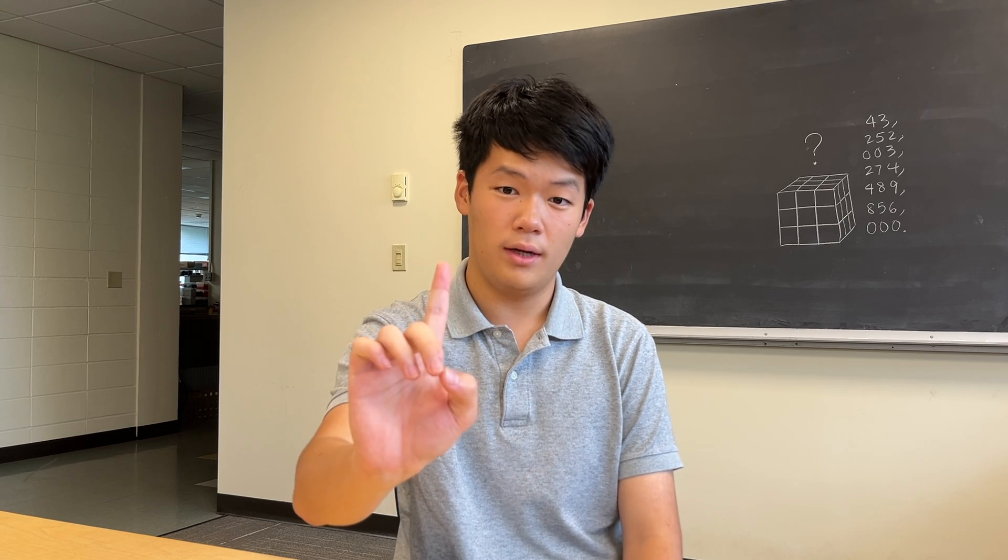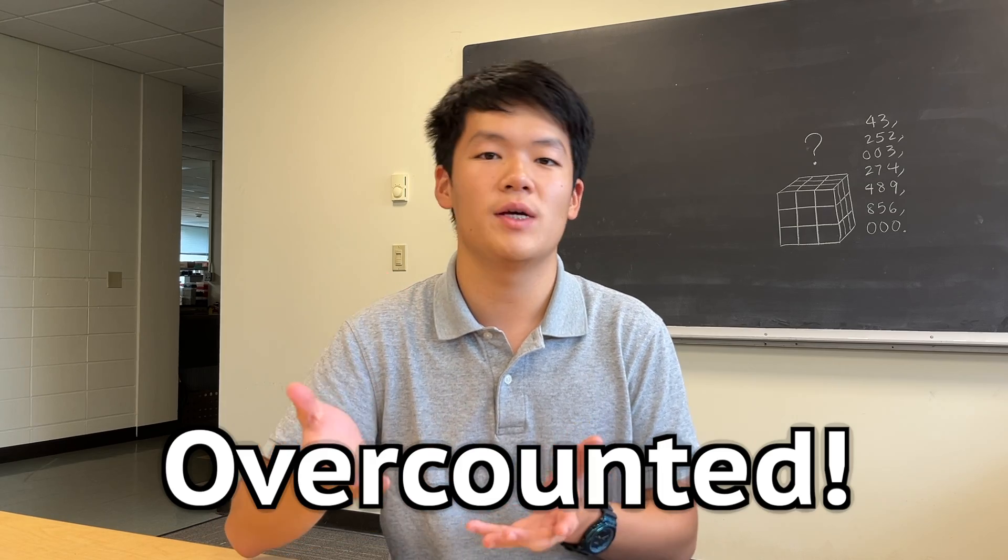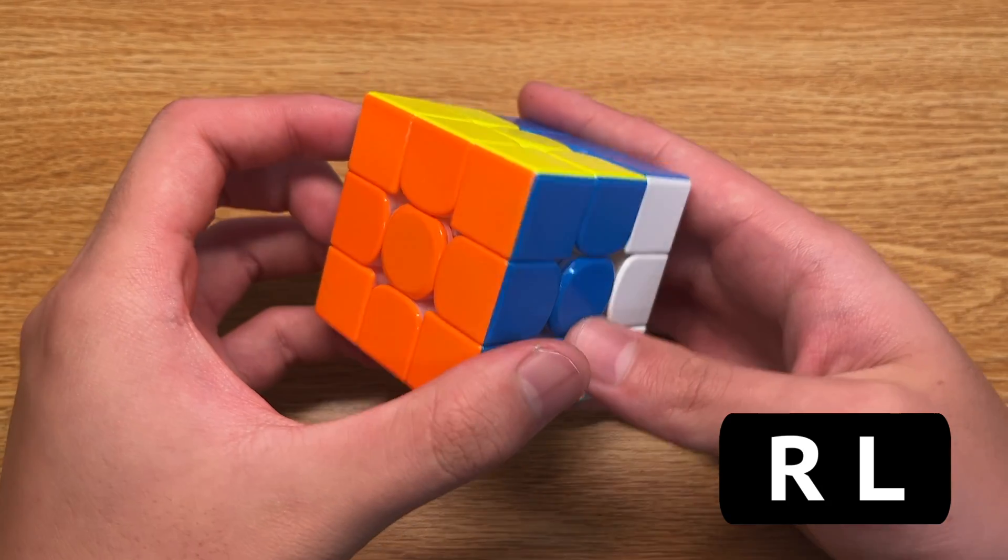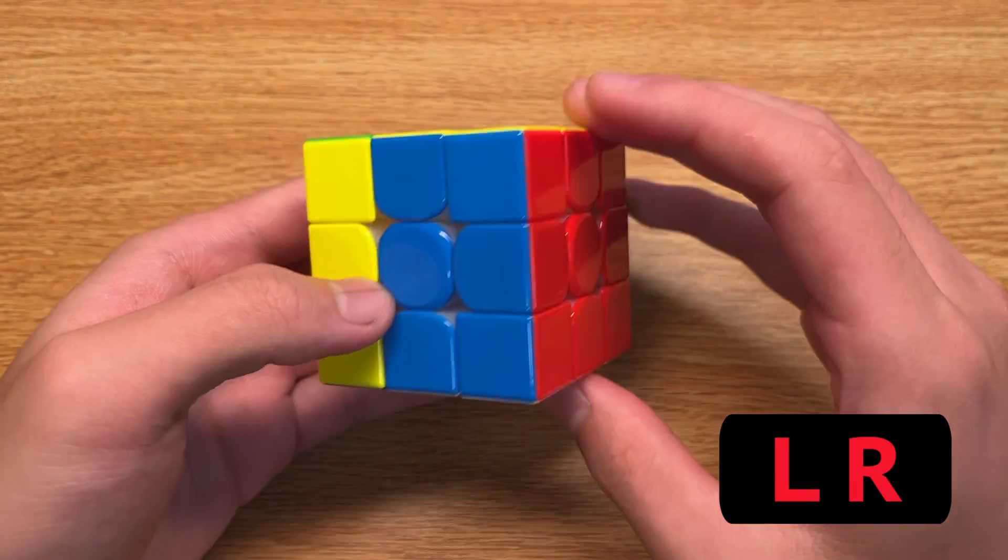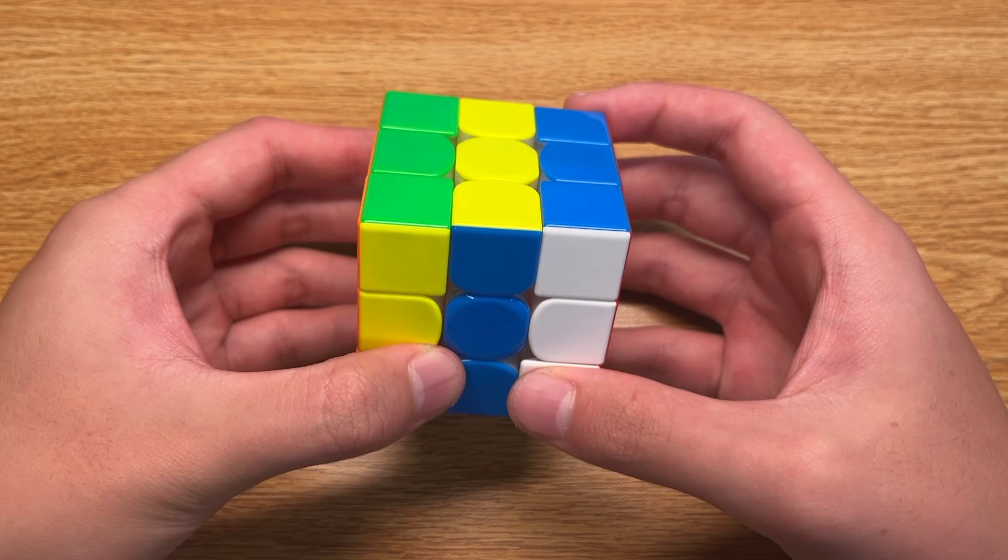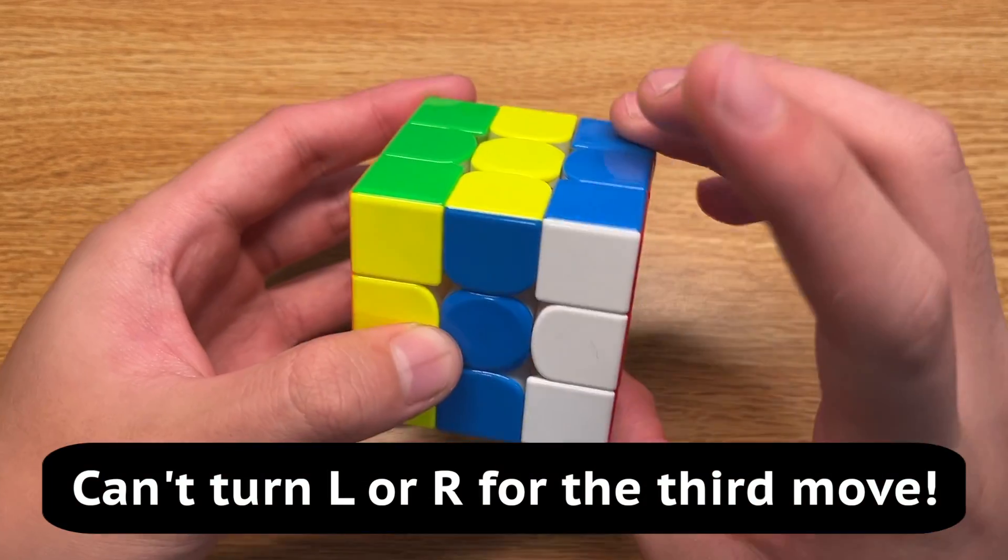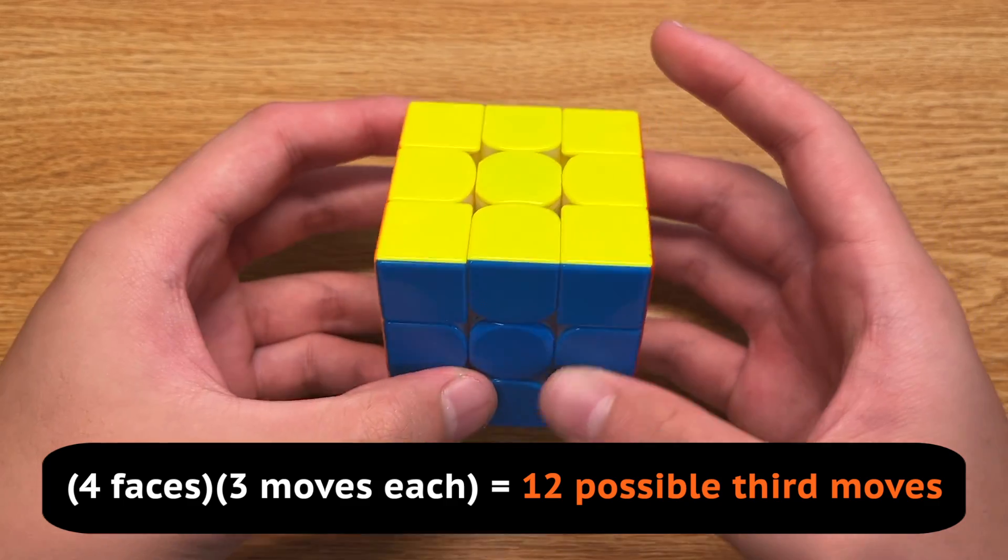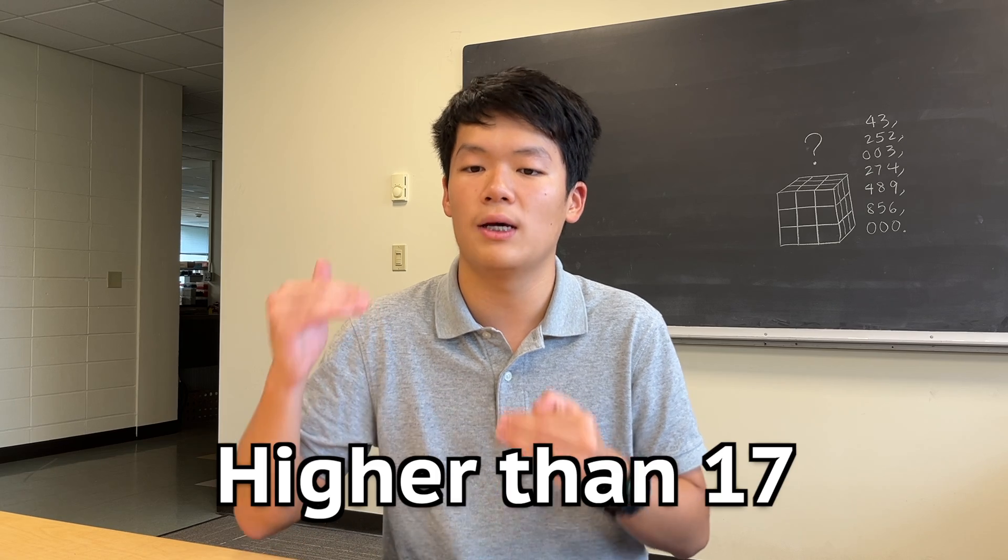But hold on, wait a minute. Each of these results were actually overcounted. Let me explain. Take a closer look at this sequence of two moves here, R and L. If we reverse these two moves, L first and then R, we would get the same sequence. Moreover, you cannot turn either one of these two parallel sides for your third move, reducing the number of possibilities for the third move down to 12. Thus, the greater bound of God's number could actually be higher than 17.